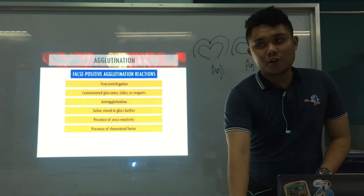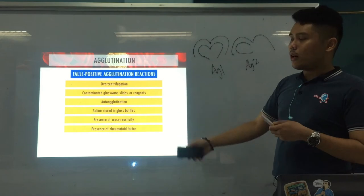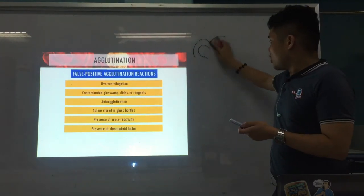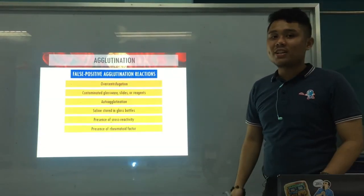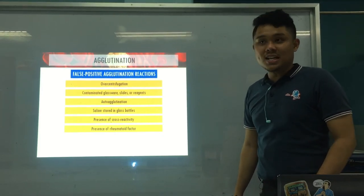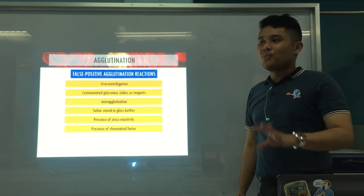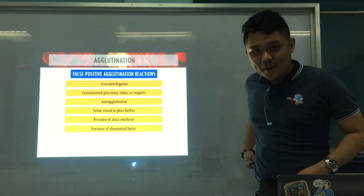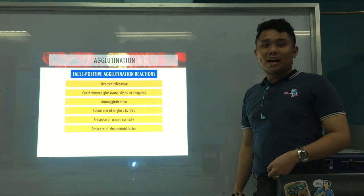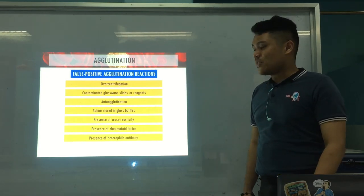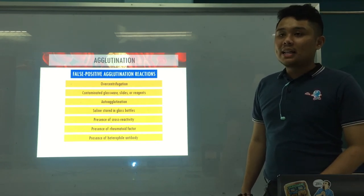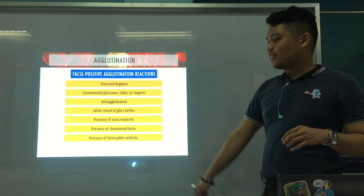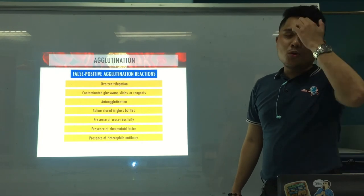Presence of rheumatoid factor: rheumatoid factor is an autoantibody — specifically an IgM — that attacks IgG antibodies. It is associated with rheumatoid arthritis. Because it is an IgM and targets IgG, it can participate in the reaction and cause false positive results. The presence of heterophile antibodies: these are antibodies that can react to antigens of different species.